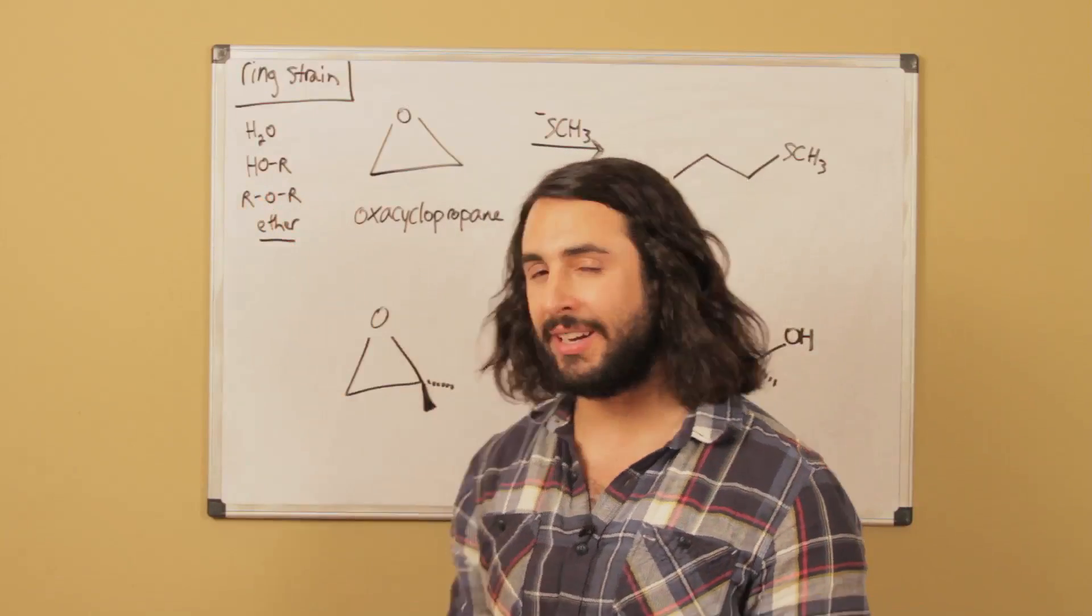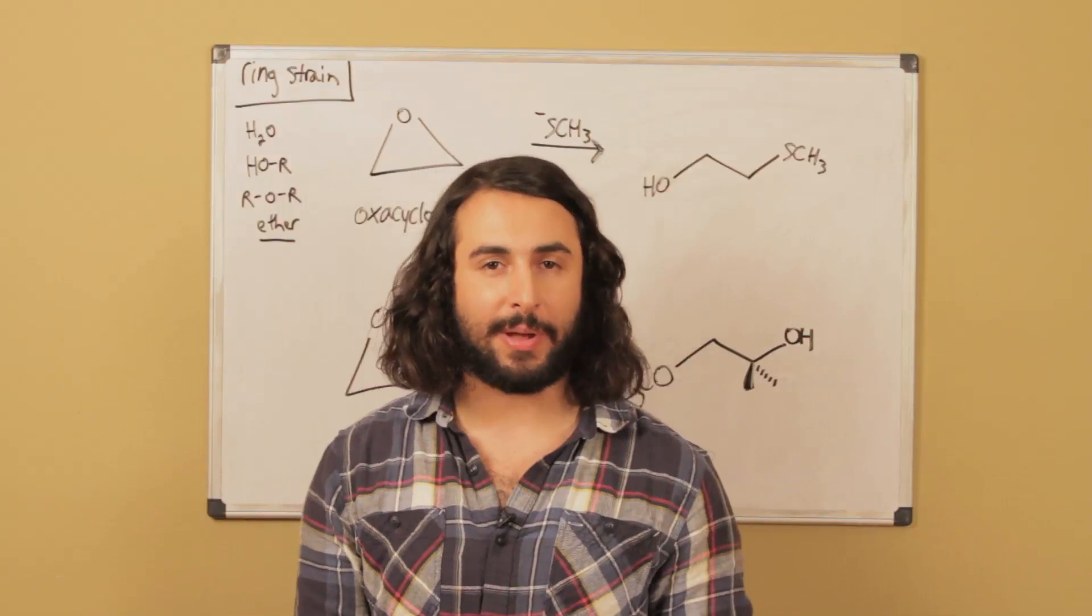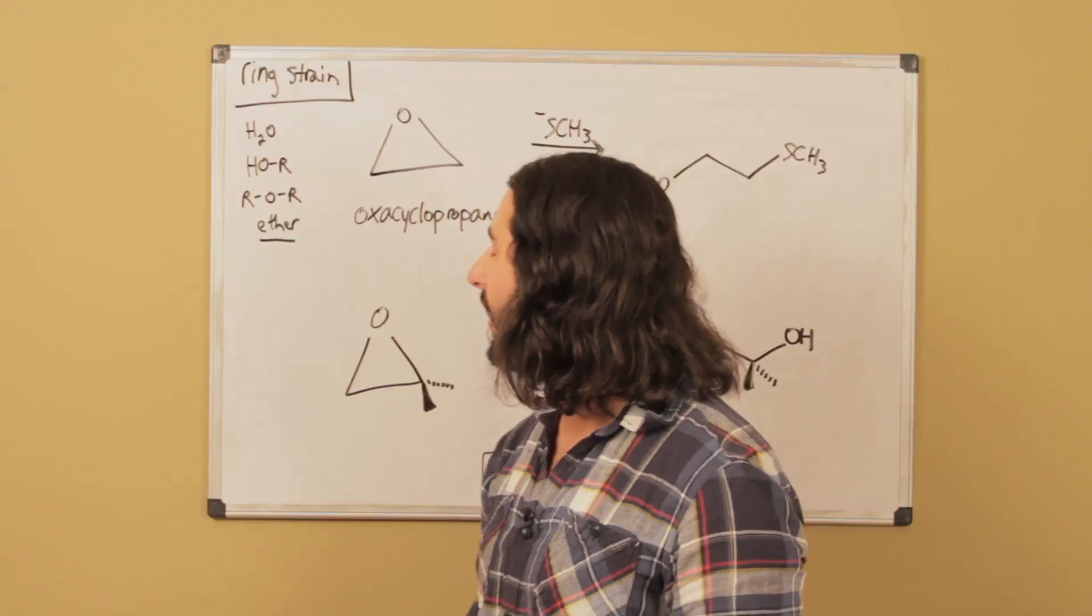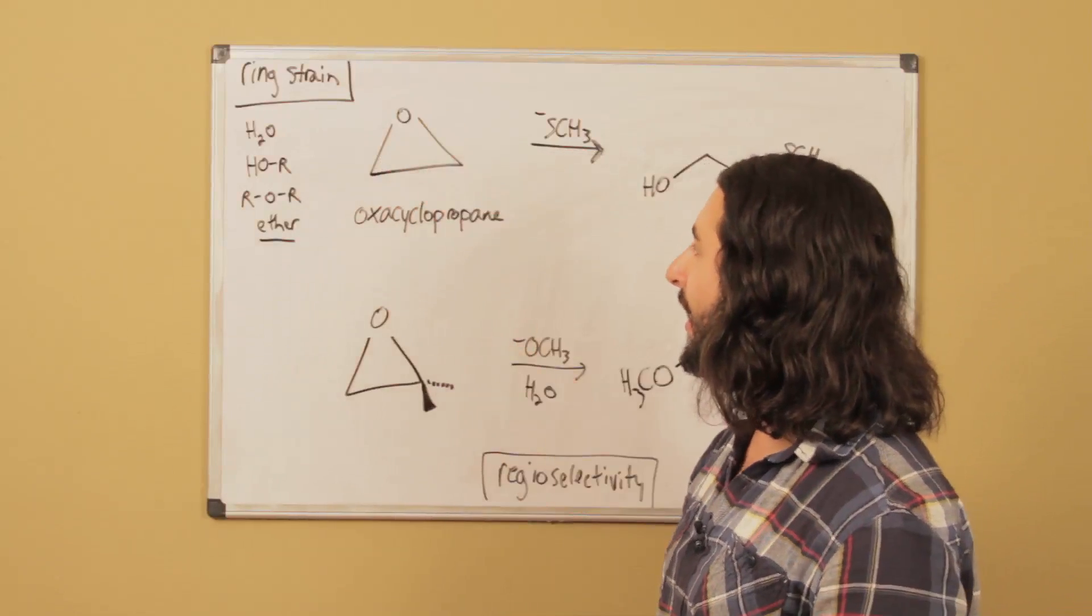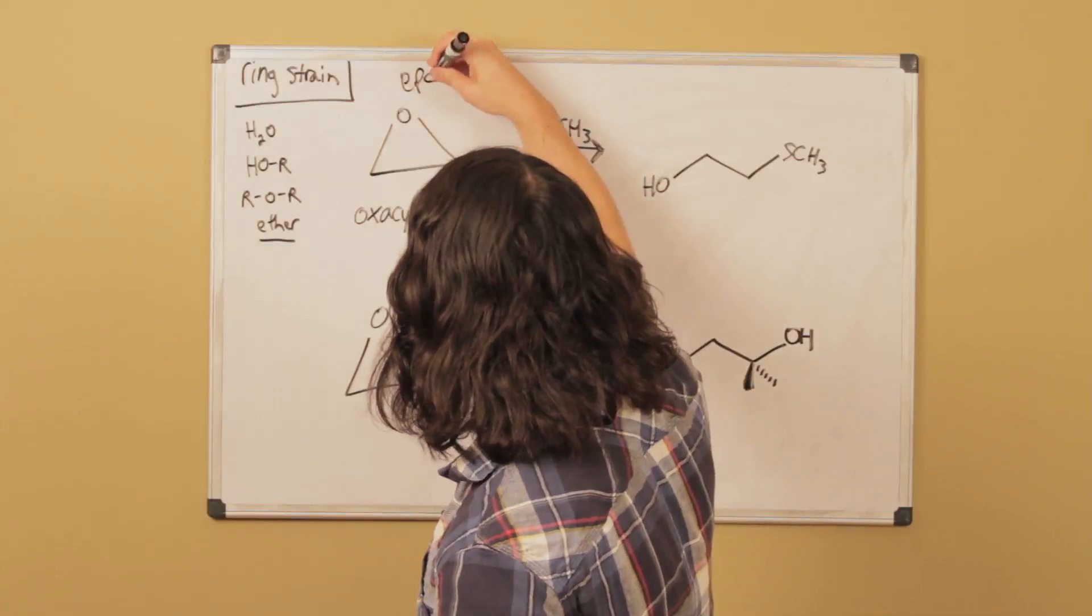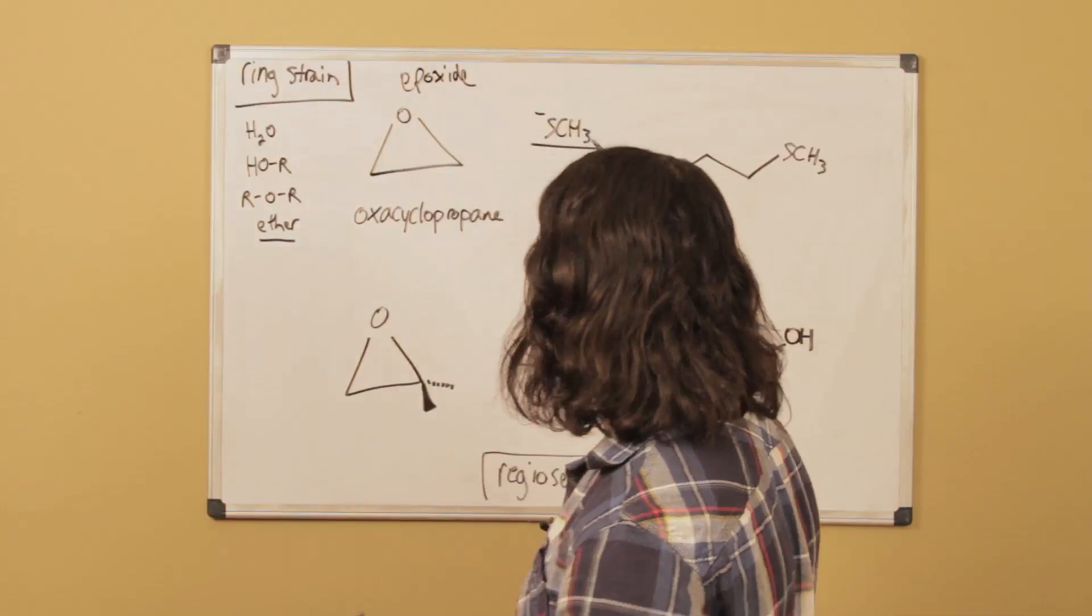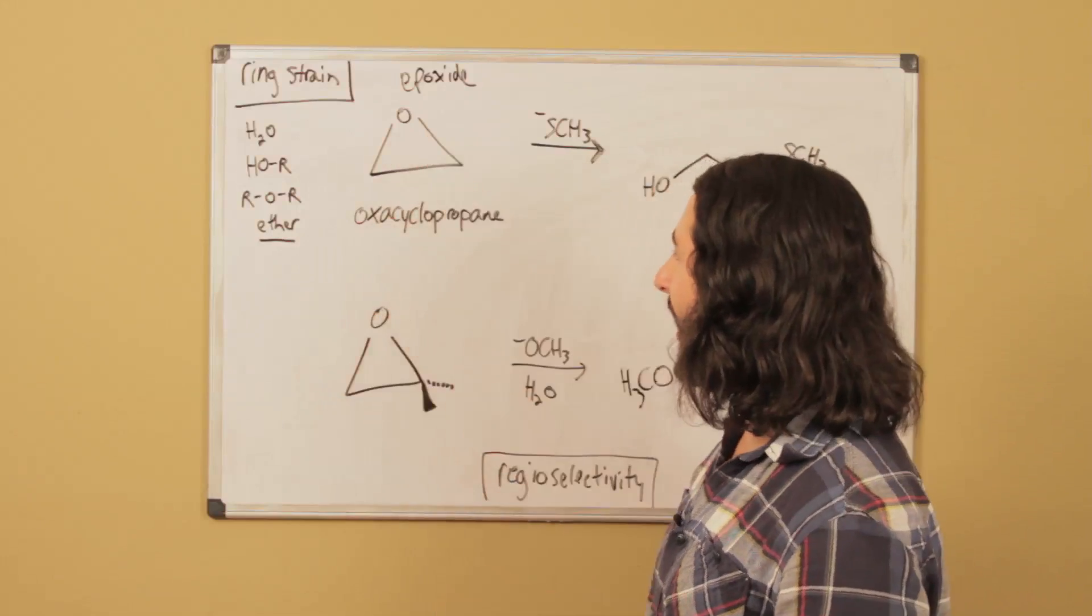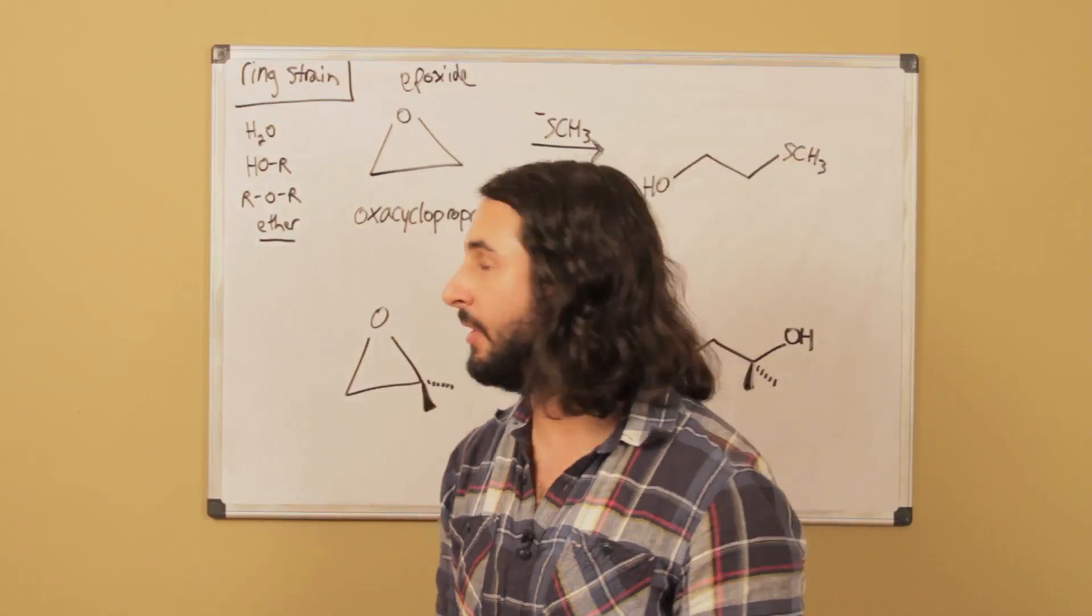These are two alkyl groups, we're going to get an ether. A cyclic three-membered ring that is an ether is called an epoxide. The simplest form is oxiranecyclopropane, just literally the three-membered ring with the oxygen as one of those members.